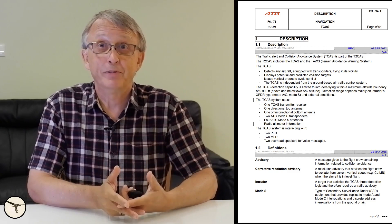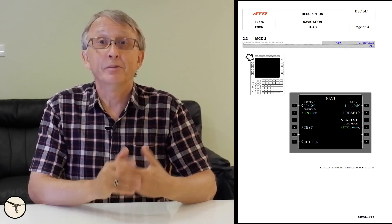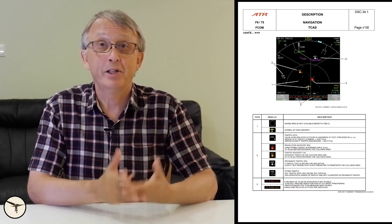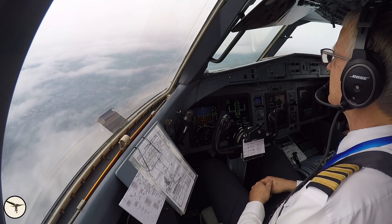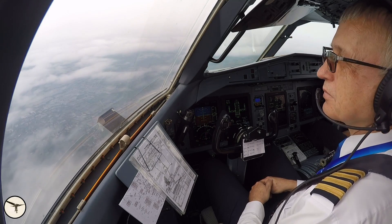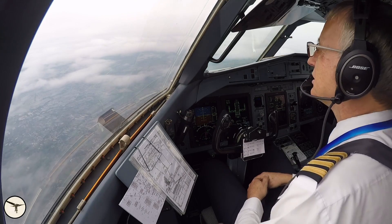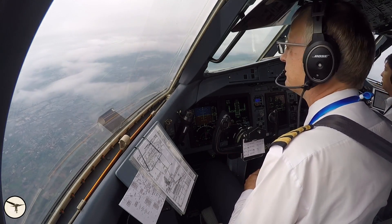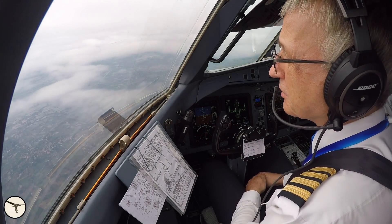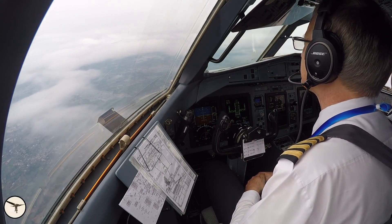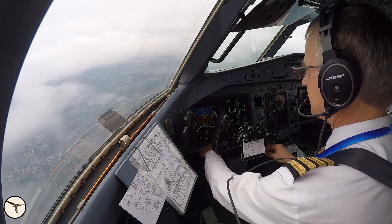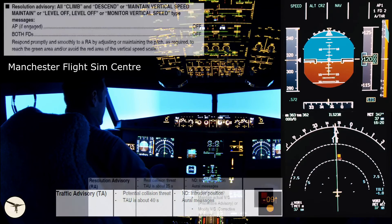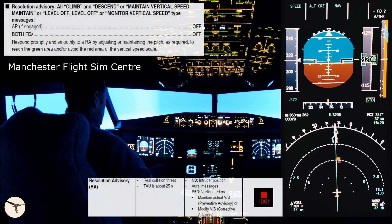The current version of TCAS 2 is version 7.1 and it became mandatory about 10 years ago. This is just a brief description of the system — as an airline pilot, you will find more information in the aircraft manual. When you receive a traffic advisory, you look out and try to find the other aircraft visually. When you receive a resolution advisory, you disconnect the autopilot and follow the command given by the TCAS. Flight directors off.